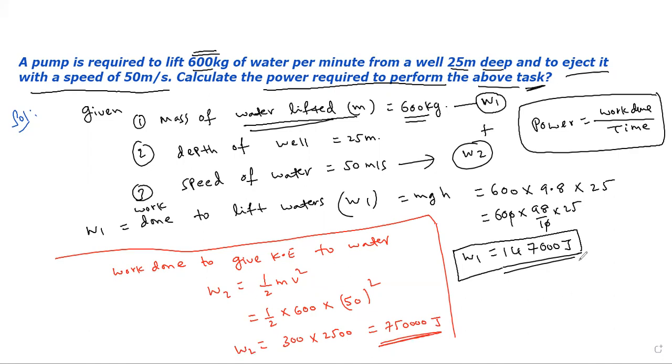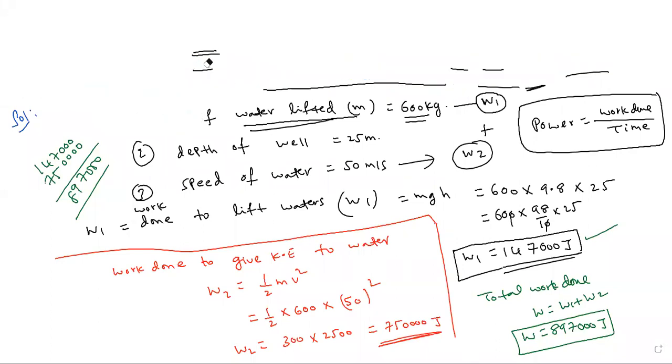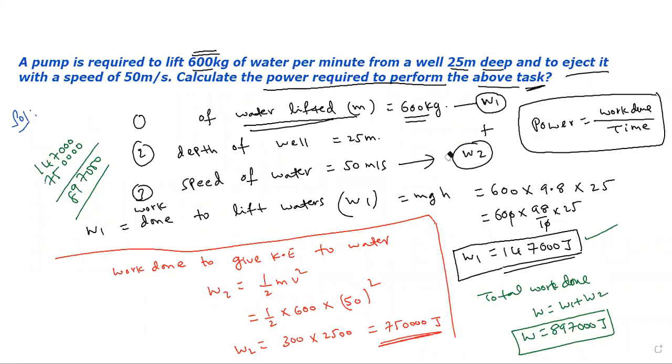Now, total work done: W1 plus W2. Let's add them. What is the answer? 147,000 plus 75,000 equals... total work done is 222,000 joules.